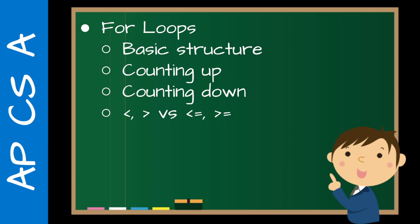So for loops — you want to go over the basic structure: for i equals zero, then you have your condition, and then you have your increment. Do a little bit about counting up, counting down, looking at different types of ending conditions. Students really want to use greater than or equal to rather than greater than, or less than or equal to rather than less than. I really emphasize the pattern: for i equals zero, i is less than whatever that maximum number is — usually it's a length, because we're iterating through some collection. I strongly recommend students stick with that pattern. They should be aware of the alternatives because some multiple choice questions will have them, and if they don't pay careful attention they'll be off by one and won't get the correct answer.